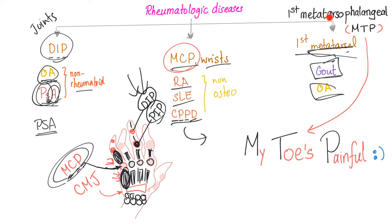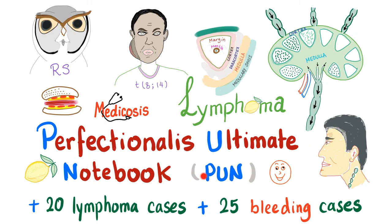Gouty attacks are triggered by eating meat and drinking alcohol. That's why in the past, gout was known as the disease of kings or the royal disease. But now, gout can come to anyone thanks to improved living standards. By the way, I have Perfectionalis's Ultimate Notebook about lymphoma — all notes condensed, plus 20 lymphoma cases and 25 bleeding cases — available at patreon.com/medicosis.